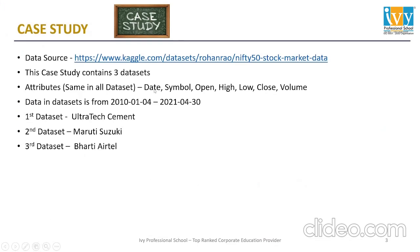The attributes in my datasets are: date, symbol, open, high, low, close, and volume. Data in the datasets is from 4th January 2010 till 30th April 2021. The first dataset is of Ultratech Cement, the second is of Maruti Suzuki, and the third dataset is of Bharti Airtel.